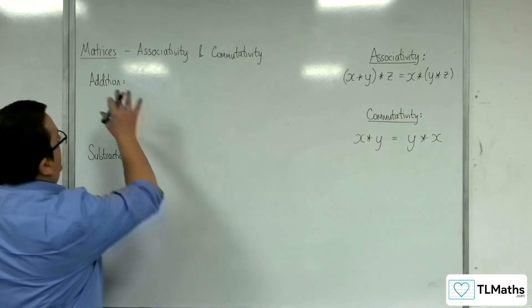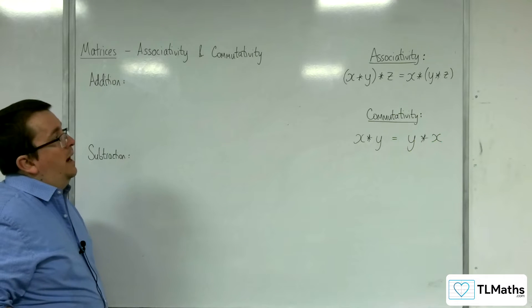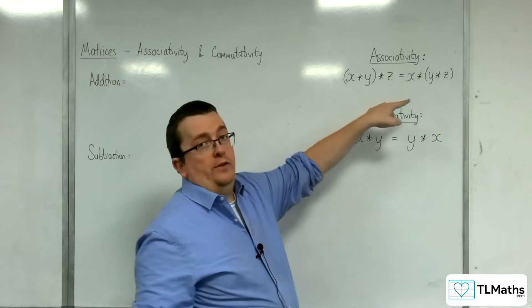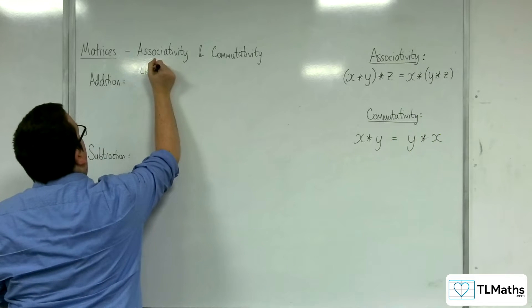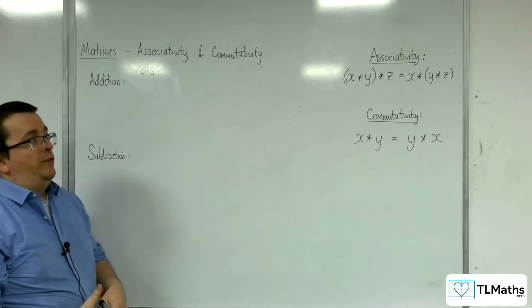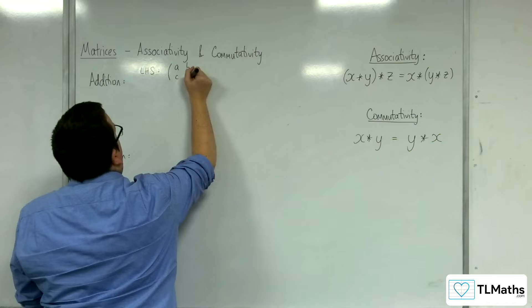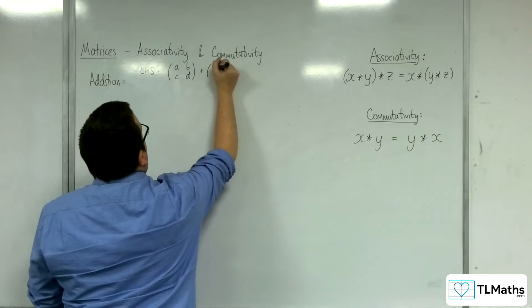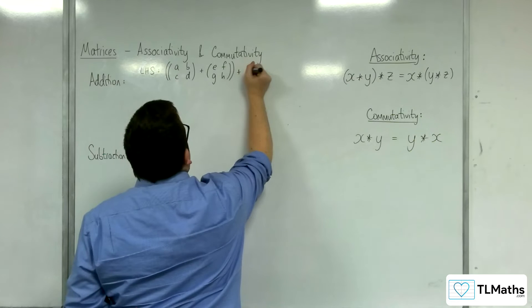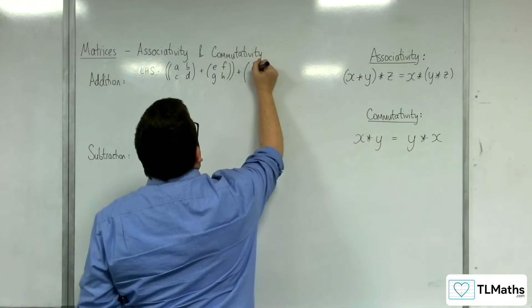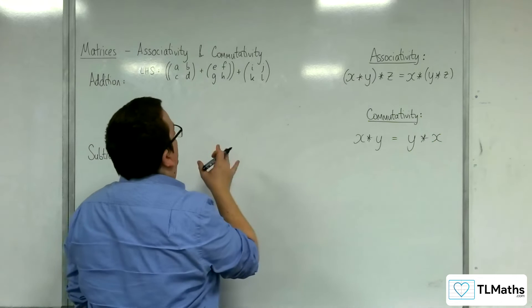So we're going to look at it from the point of view of matrices. Let's first look at addition and determine whether addition is associative for matrices. For our left-hand side, we're going to have to come up with three matrices, one for x, y and z. We're going to stick with a 2 by 2 matrix. We could have a, b, c, d, and then add on e, f, g, h. So we're going to add those together first and then add on the next matrix, which will be i, j, k and l.